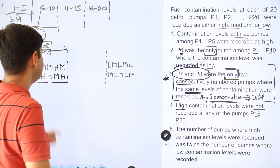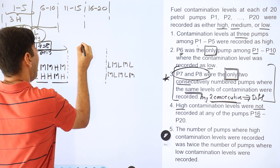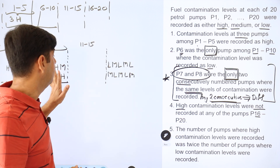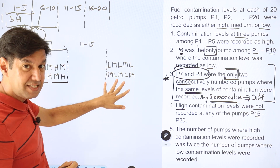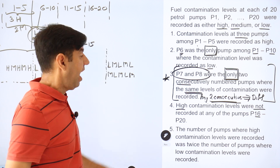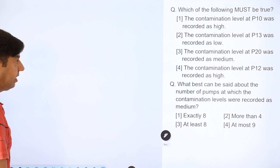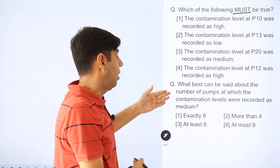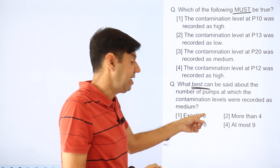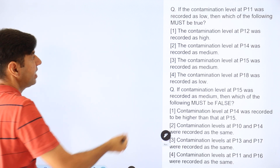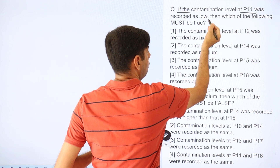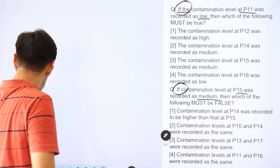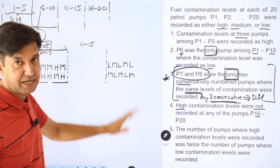The two possibilities for pumps 6 to 10 and the two possibilities for pumps 16 to 20 are independent of each other, giving four total possibilities overall. Pumps 11 to 15 have no clue given, so there could be many possibilities there — which makes this part of the set tough. Looking at the questions, they confirm there are multiple possibilities and conditional clues.